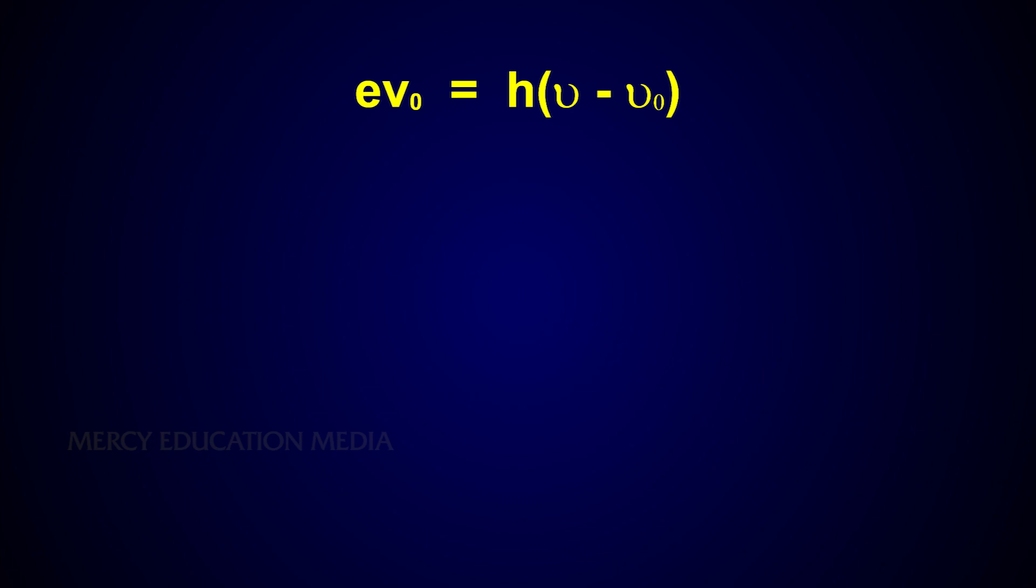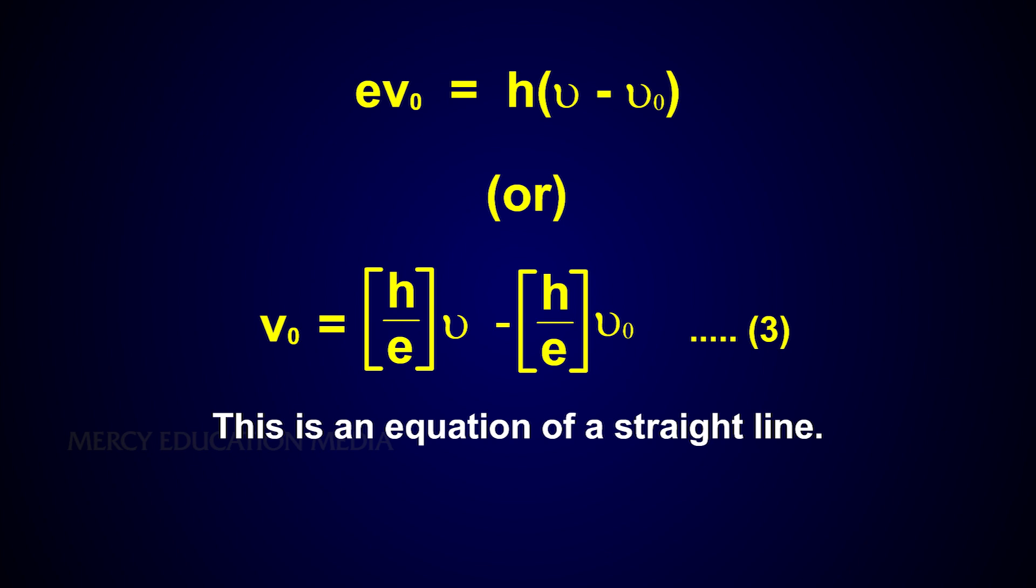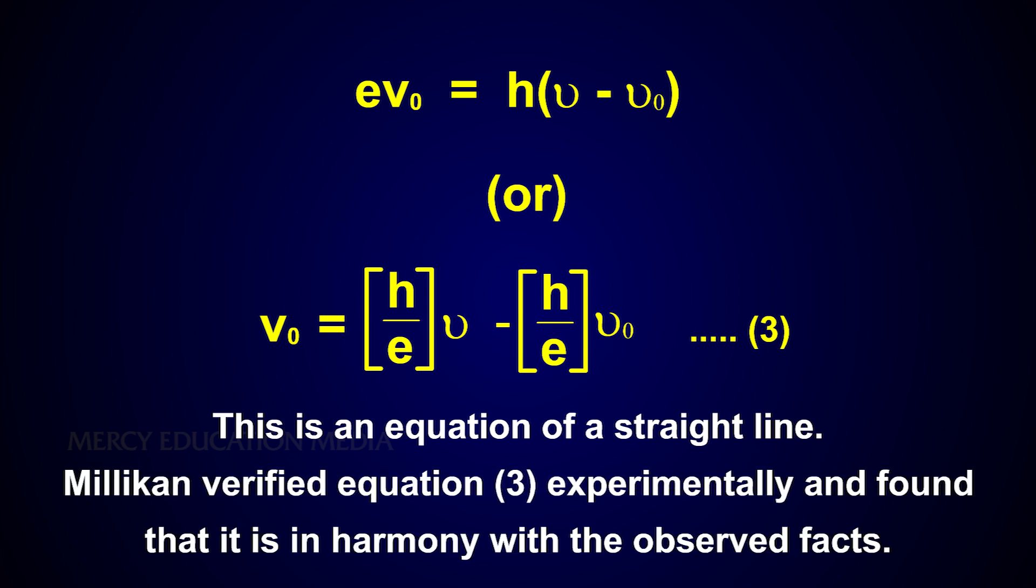From equations 1 and 2, eV₀ = h(ν - ν₀), or V₀ = (h/e)ν - (h/e)ν₀. This is an equation of a straight line. Millikan verified this equation experimentally and found that it is in harmony with the observed facts.